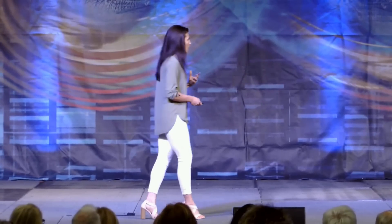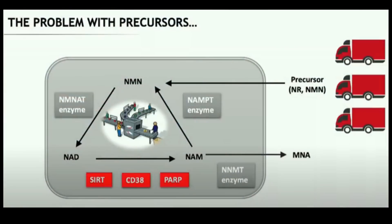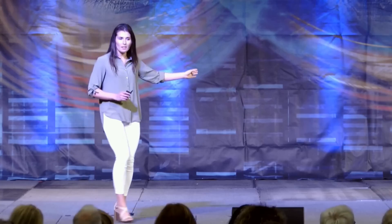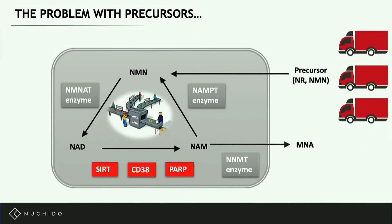Think of the cell as a factory. The enzymatic pathways are the production line, and the precursor is the raw material being shipped in. If the production line has become old — the machines aren't working, product is leaking out of the pipes — simply increasing the shipment of raw materials isn't going to increase output. It's just going to pile up at the door because the production line can't cope. That's exactly the same principle as precursor supplementation: you're not addressing the underlying reasons why NAD is declining.